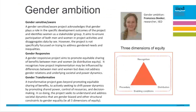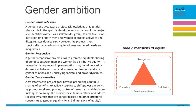I just wanted to show you how we're defining gender ambition at IIED. Hopefully you now have a new slide that we can refer to. So as a very minimum, we're talking about gender-sensitive or gender-aware projects. These are projects that acknowledge that gender plays a role in specific development outcomes, but it identifies women as a stakeholder group. Gender-sensitive or aware projects would aim to ensure the participation of both men and women in its activities, and it should disaggregate data by sex.